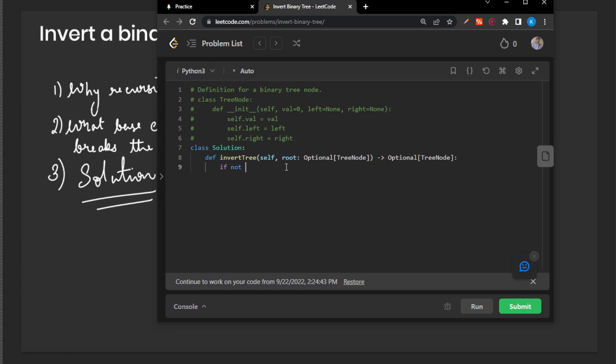So if not root, return. But if we pass this condition, this base condition, then we need to go to our children and perform the same function that we will write right now, this particular function.